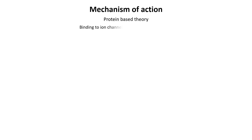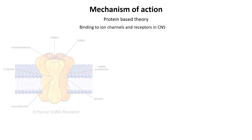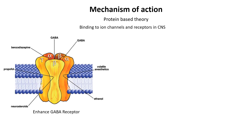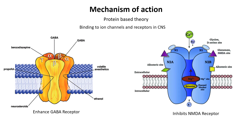The protein-based theory suggests that anesthetics act by binding to and modulating ion channels and receptors in the central nervous system. Key targets include GABA receptors, where anesthetics enhance inhibitory neurotransmission, and NMDA receptors, which they block to inhibit excitatory signals.